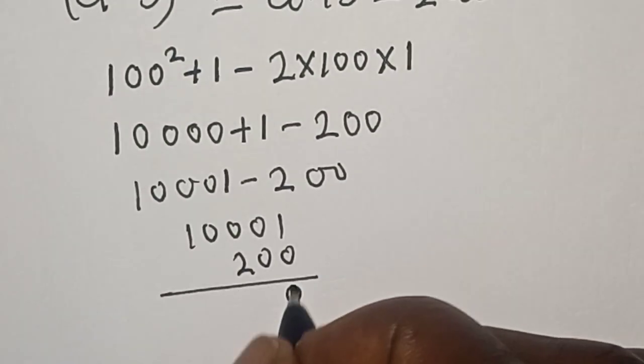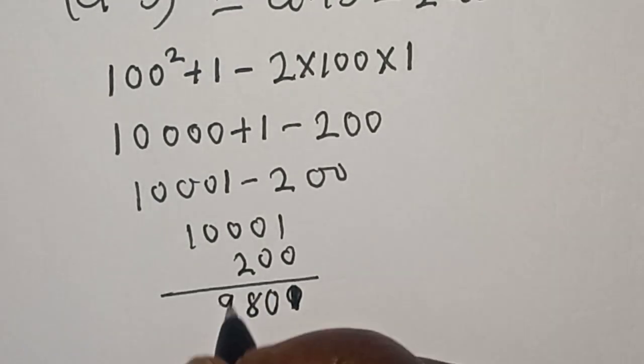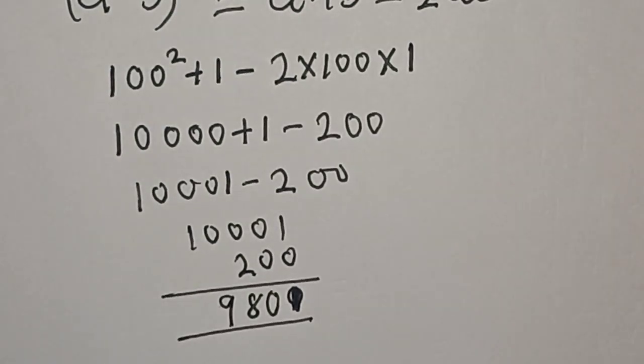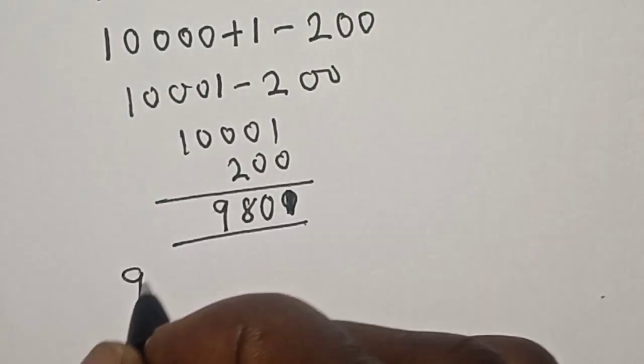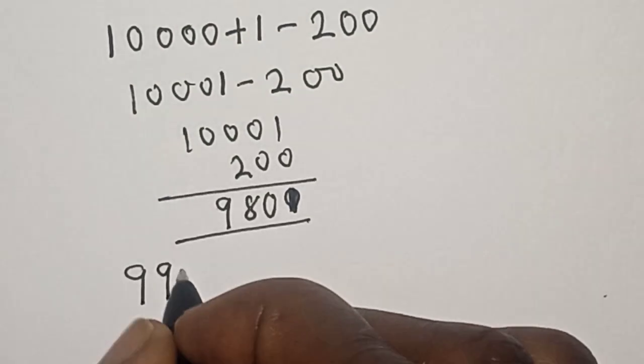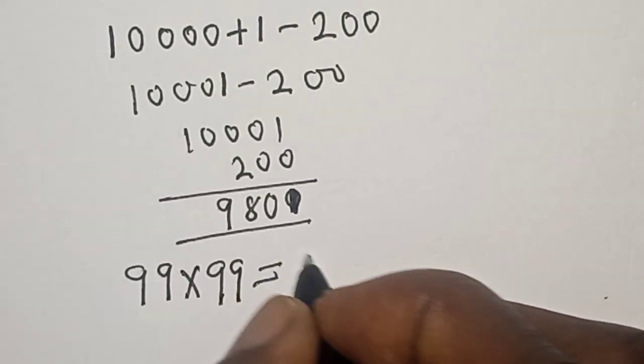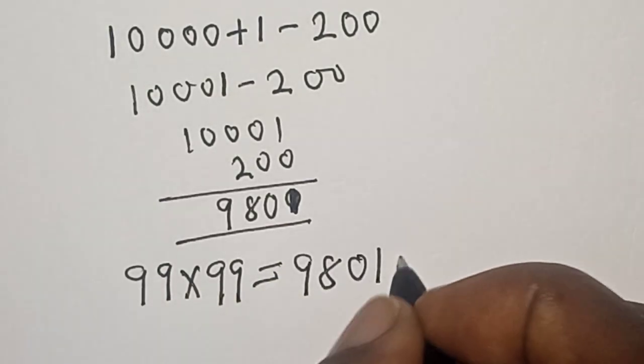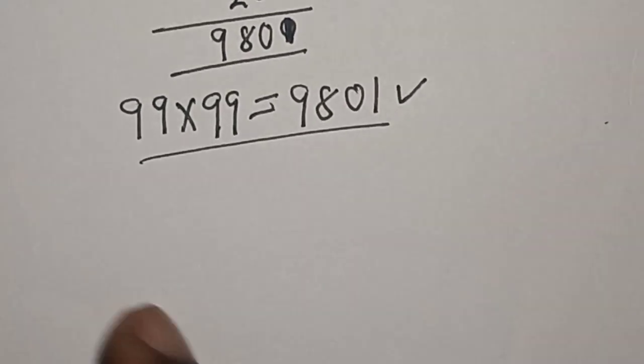Now we have 9, 8, 0, 1. So our final answer is 99 × 99 = 9,801 for the first case. Also, let's consider the second method.